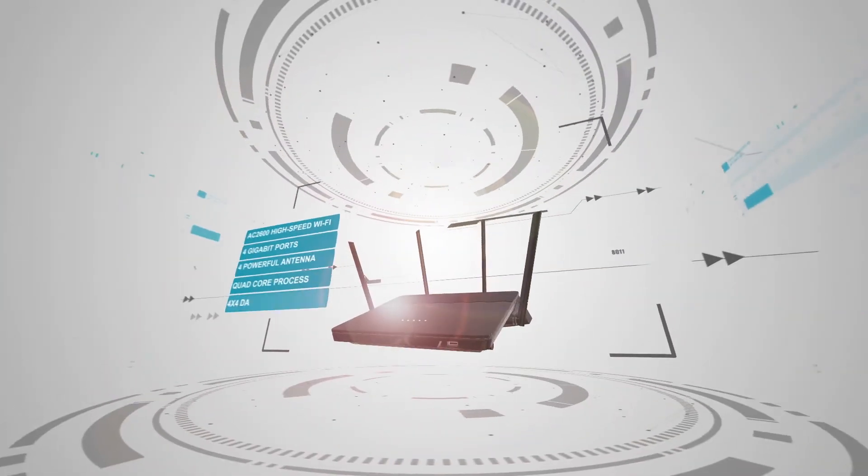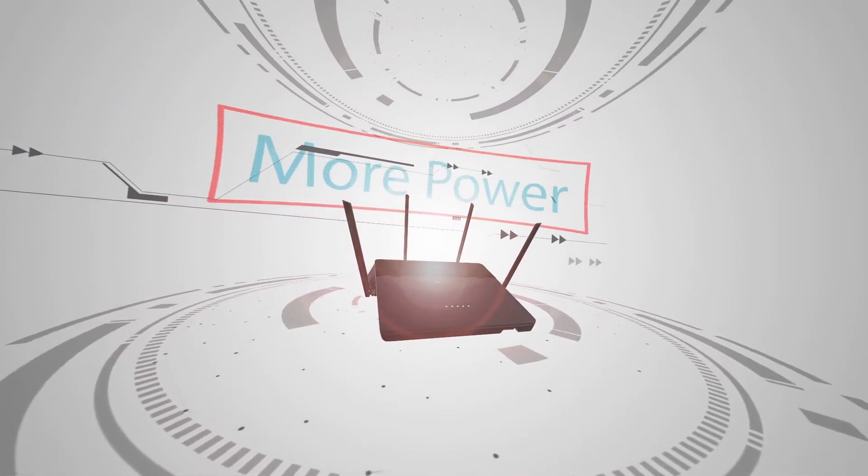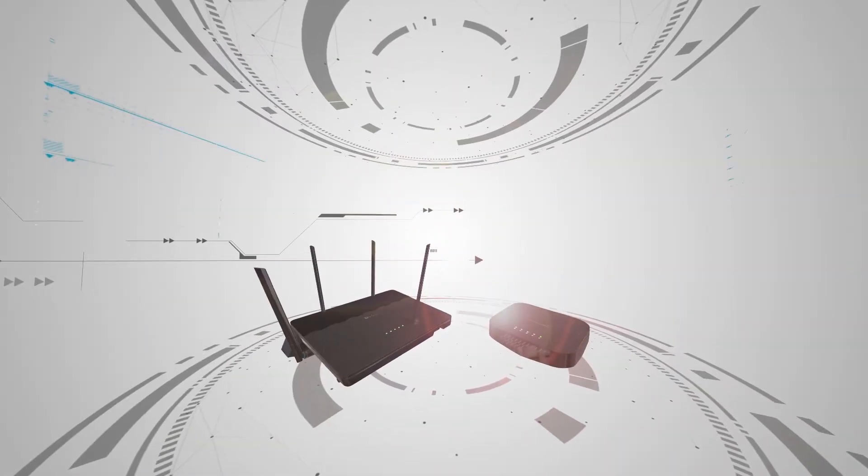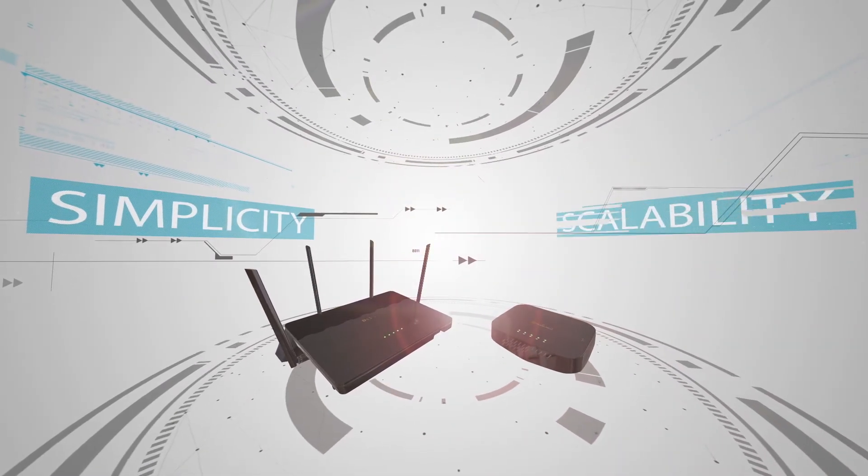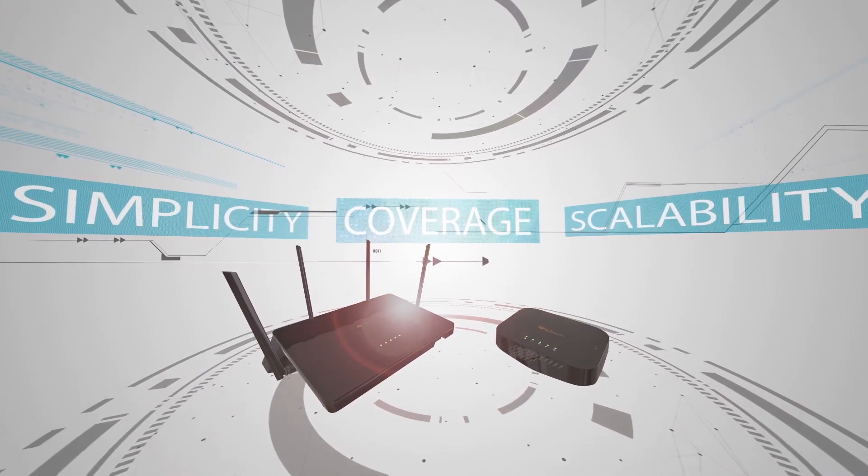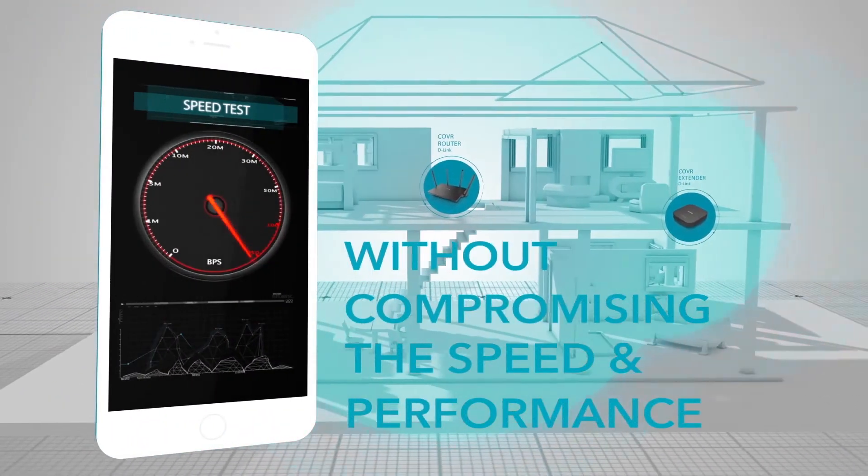Cover takes the speed, features, and power of a high-end router with faster speeds, more connectivity, more range, more power, and better streaming. It's perfect for your connected home and combines it with the simplicity, scalability, and coverage of a Wi-Fi system, giving you the best of both worlds. It gives you all the coverage you need without compromising the speed and performance.